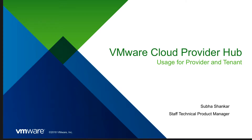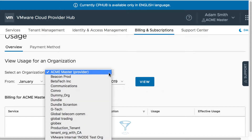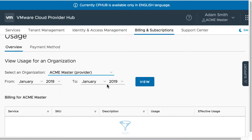I'm Subhash Shankar, and in this session we will cover the most interesting feature of VMware Cloud Provider Hub, where from a single console a provider can get the aggregated usage and the aggregated effective usage for any organization. A provider can generate and view usage in a provider organization for the provider org as well as any of the tenant orgs underneath this provider for the period selected.